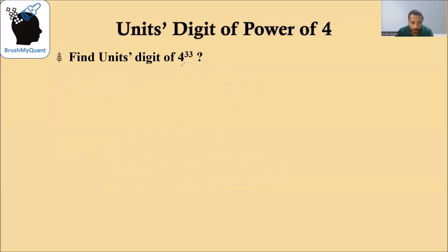Find the units digit of 4 raised to 33. Now 33 is an odd number, that means the units digit will be the same as the units digit of 4 raised to 1, which is equal to 4.